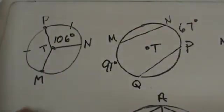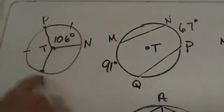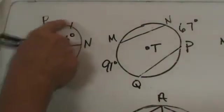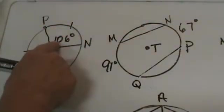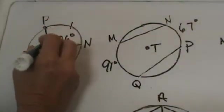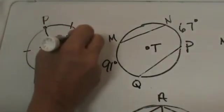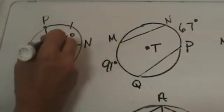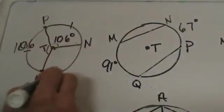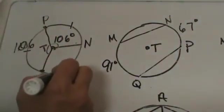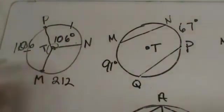Find the measure of MN. We have a circle and two congruent arcs. The central angle is 106°, so the arc is 106°. This angle would be 106° and this arc would be 106°. We have used up 212 degrees out of our 360.